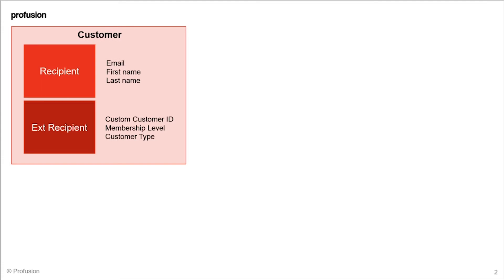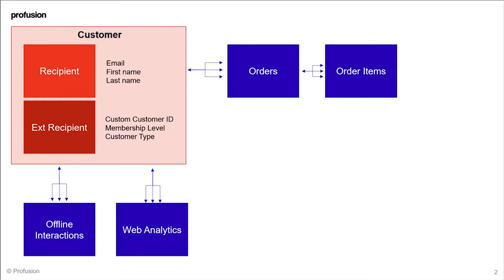This could be extending the recipient table, which holds the customer level information, and you can extend it with additional attributes that are more relevant to your business. It could also be creating linked data to your customers to give a more rich view — for example, bringing in order data, transactional data, or more rich information about your customers' interactions both on the web or offline.